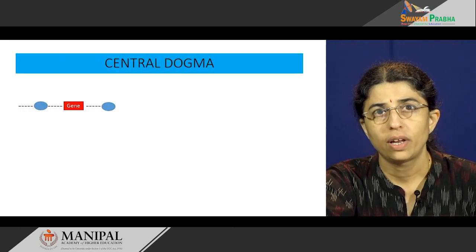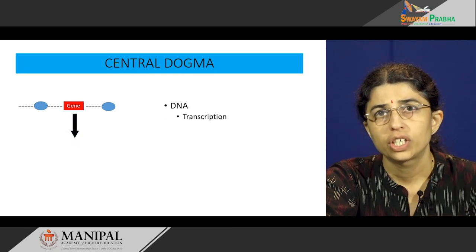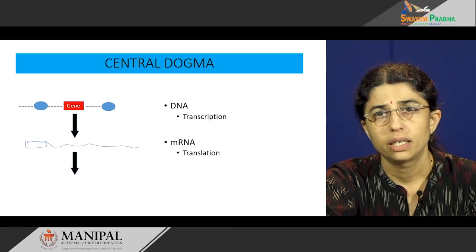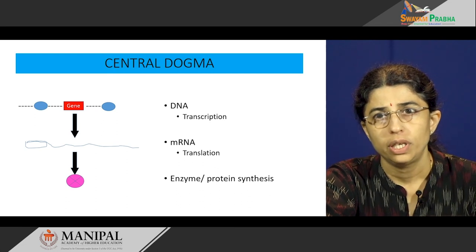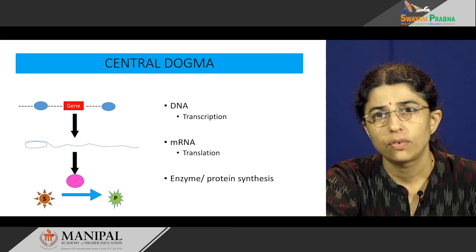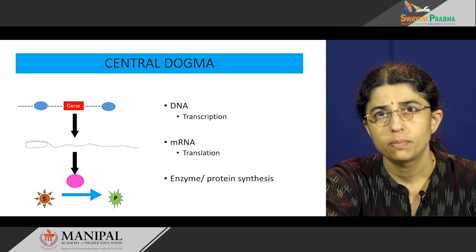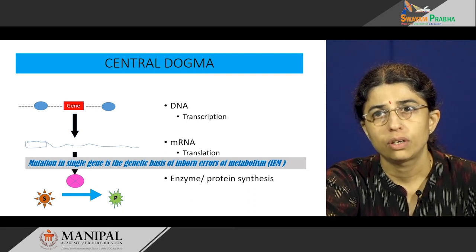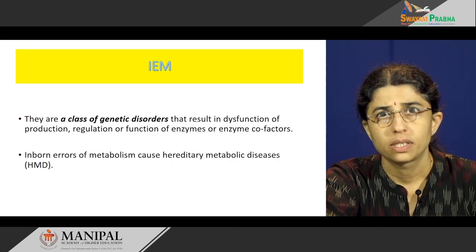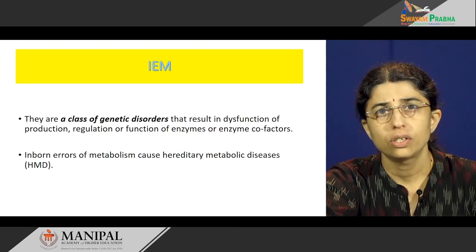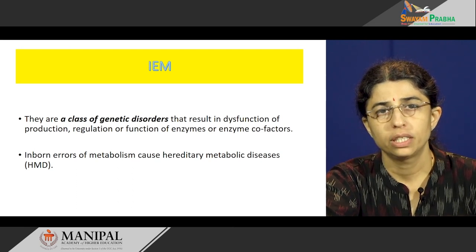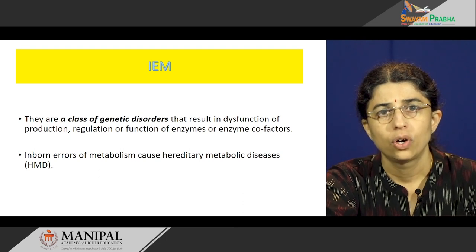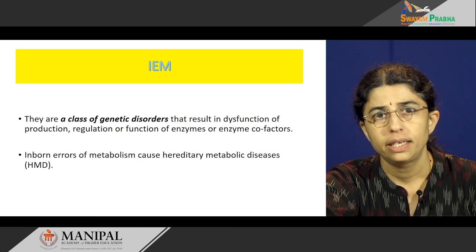The central dogma of life is that DNA, which carries the genes, undergoes transcription to produce mRNA. This mRNA undergoes translation to produce an enzyme or protein, and this enzyme is required for conversion of substrate into products through various metabolic processes. So, mutation in a single gene is the genetic basis of Inborn Error of Metabolism. IEMs are a class of genetic disorders that result in dysfunction of production, regulation or function of enzymes or enzyme cofactors, and these IEMs cause hereditary metabolic diseases.